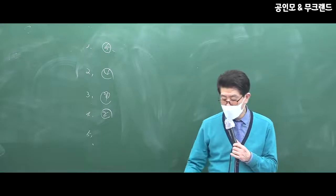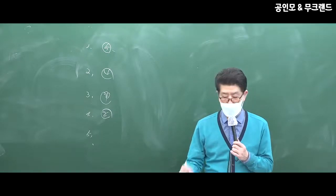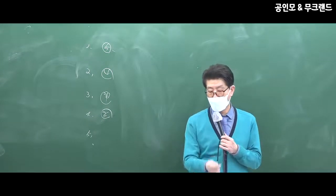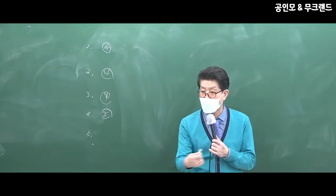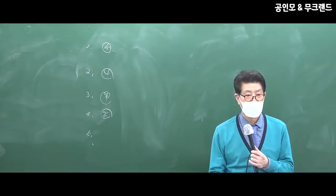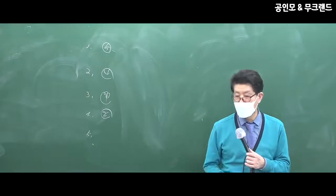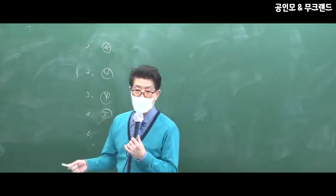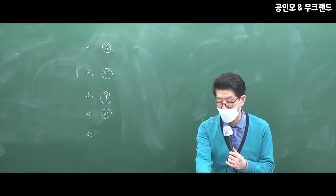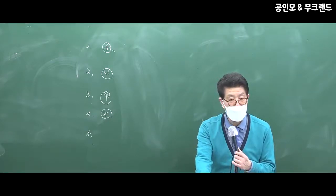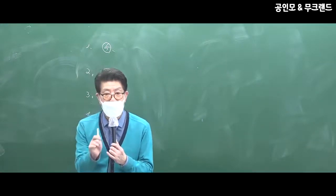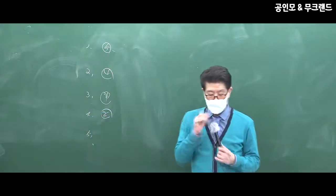장기보유특별공제는 공제율을 양도차익에 곱합니다. 가액에 곱하면 안 돼요. 그리고 비사업용 토지도 요건이 충족되면 기본공제든 장특공제든 해줘요. 5번이 중요한데, 포인트가 2월 과세입니다. 그럼 보유기간은 증여자가 취득한 날로부터 시작합니다. 3년 따질 때, 증여한 배우자 취득한 날로부터 기산이에요. 증여자 취득일로부터이며, 증여받은 날로 하면 틀려요.